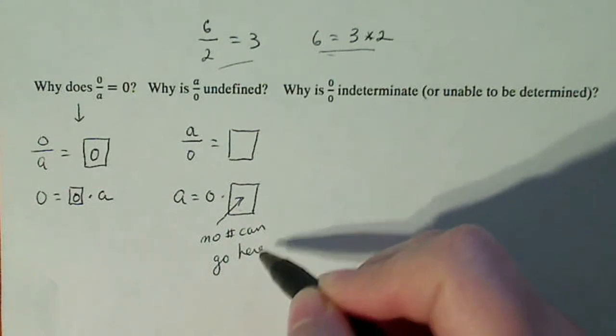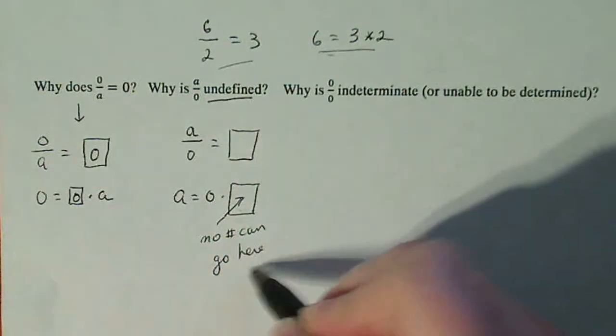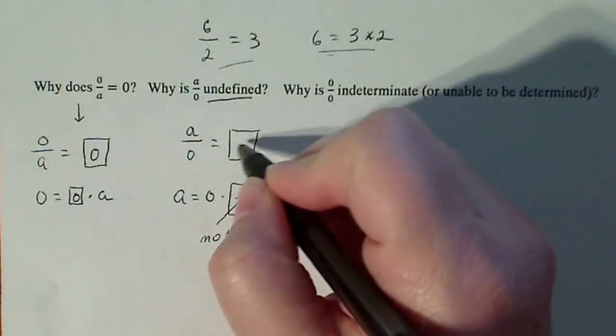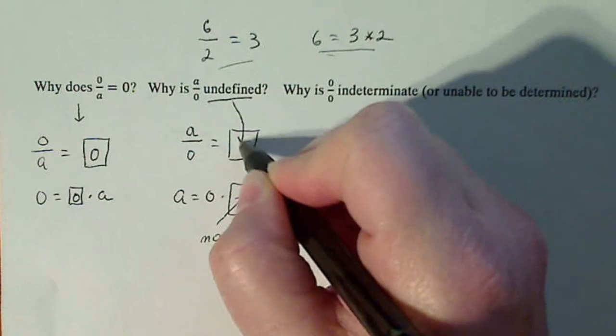So that's why we say A over 0 is undefined because there's no number defined out there that we can put in that box. So we say it is undefined.